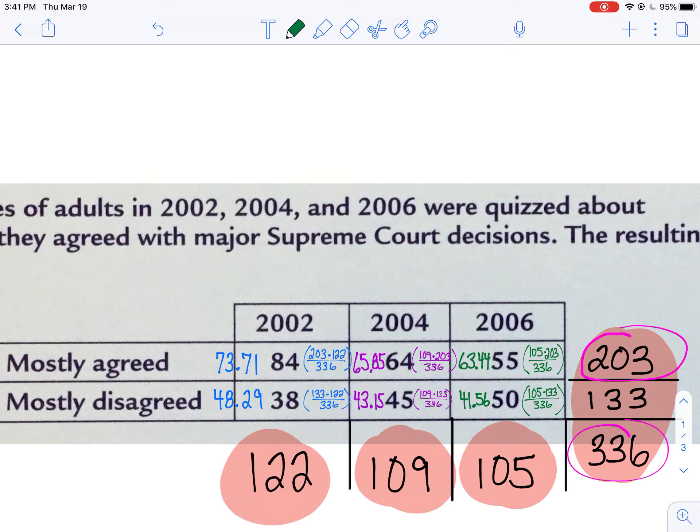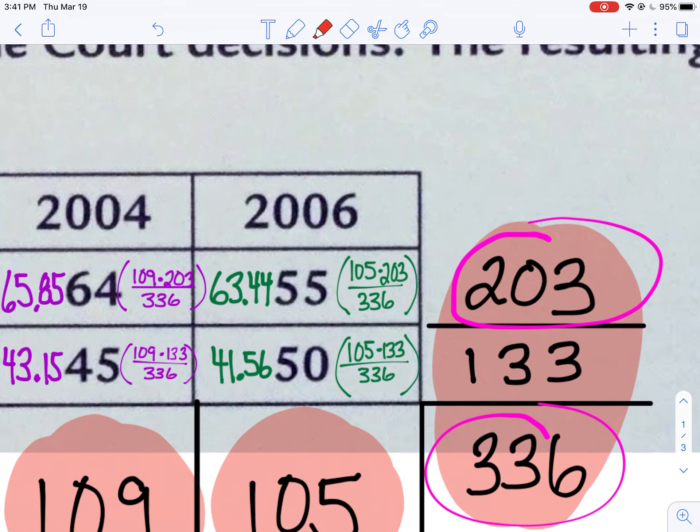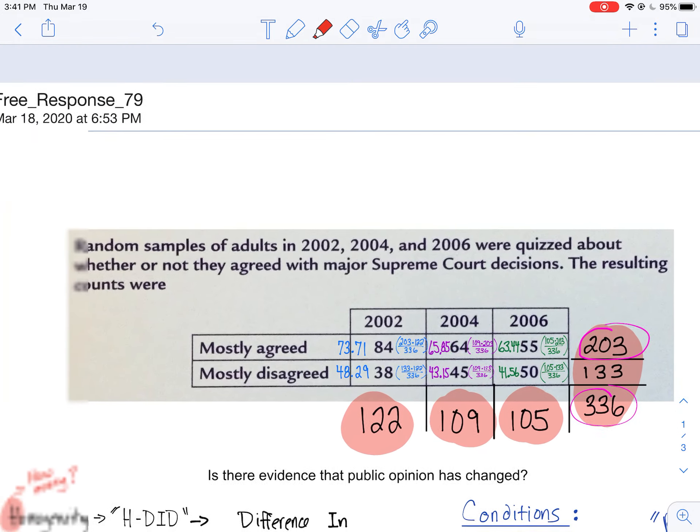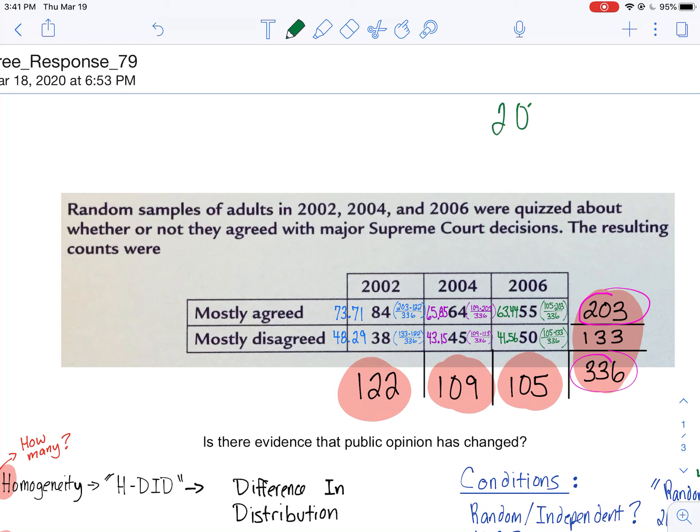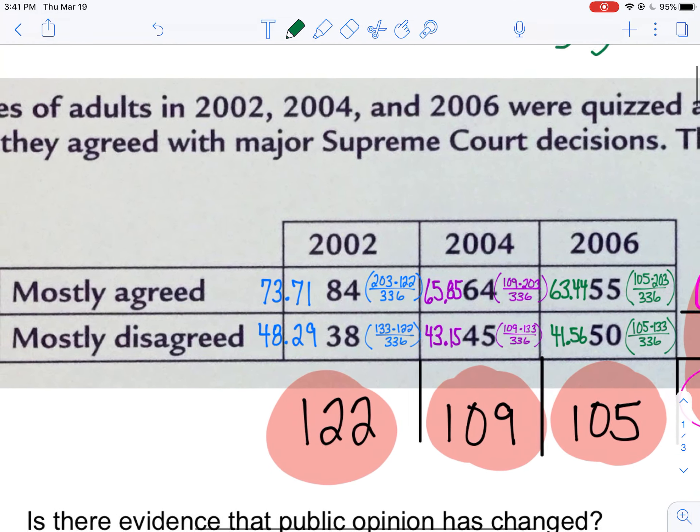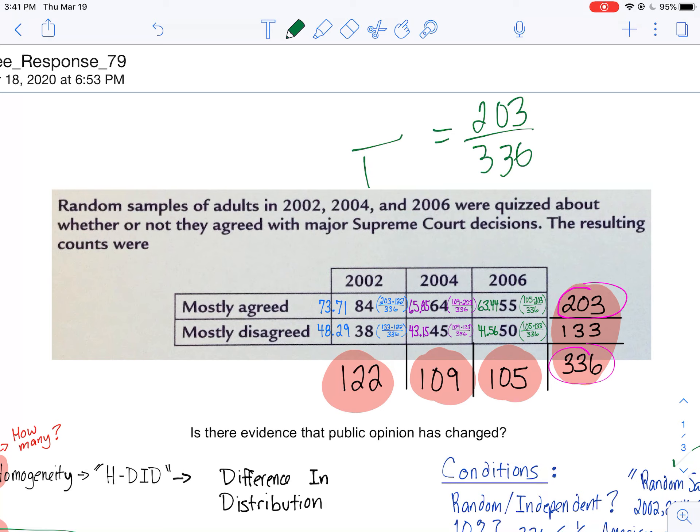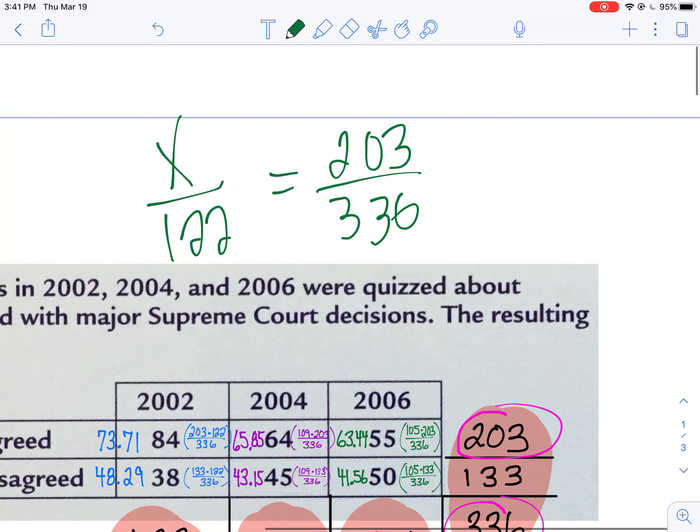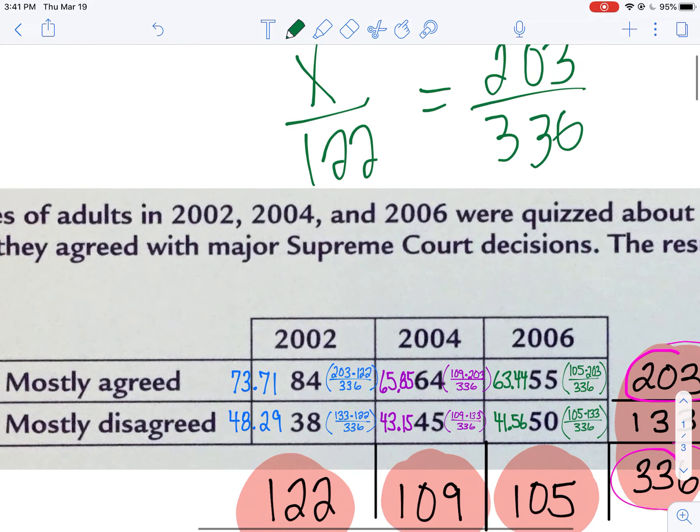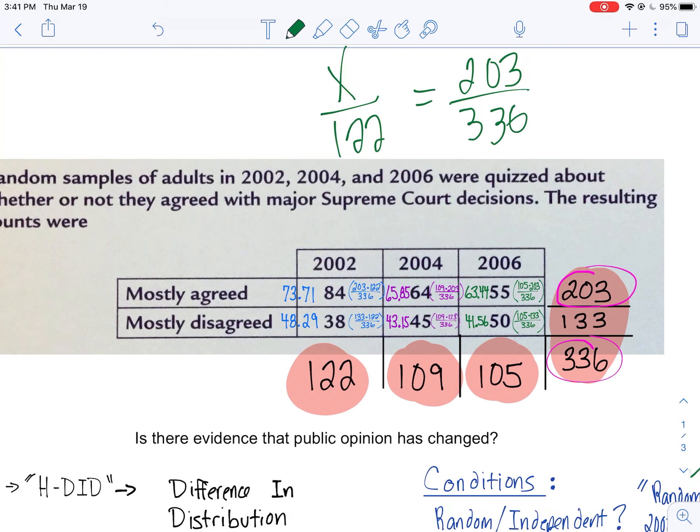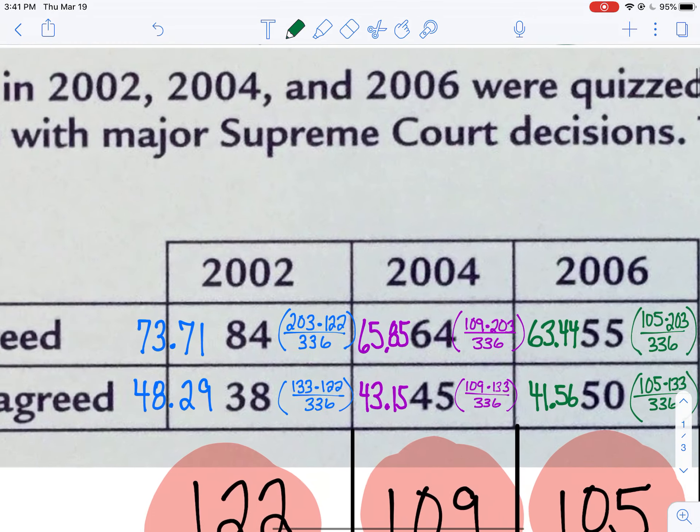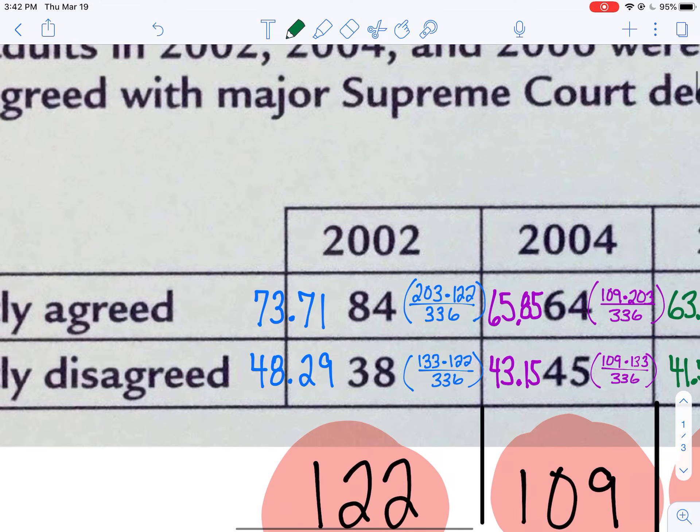When I used to teach 7th grade math, I always used to talk about relationship within proportions. So right here I'm looking at mostly agreed over a total. So I do 203 over 336, and then I can go to here, 2002, see if this proportion holds up. This is what I'd expect. Over my total of 122, how many would I expect to mostly agree if that proportion or ratio is the same here? If it's 203 over 336, if that ratio maintains, what would I expect to see out of 122? So then you just cross multiply. 122 times 203 divided by 336, just like I did here. You'll notice I got my expected count of 73.71.